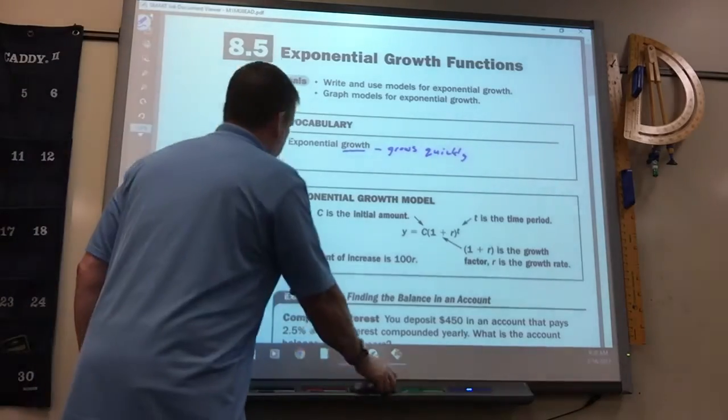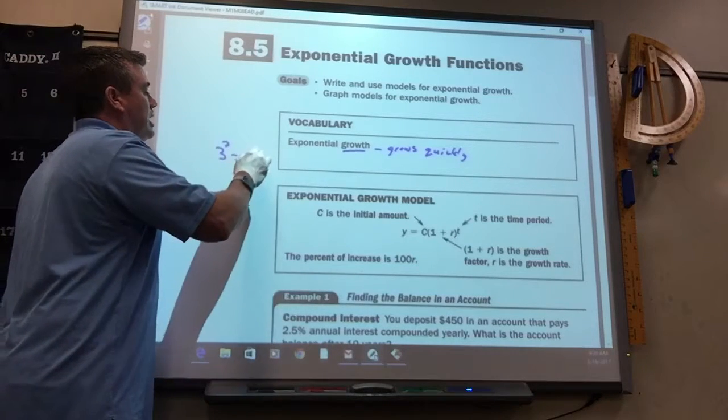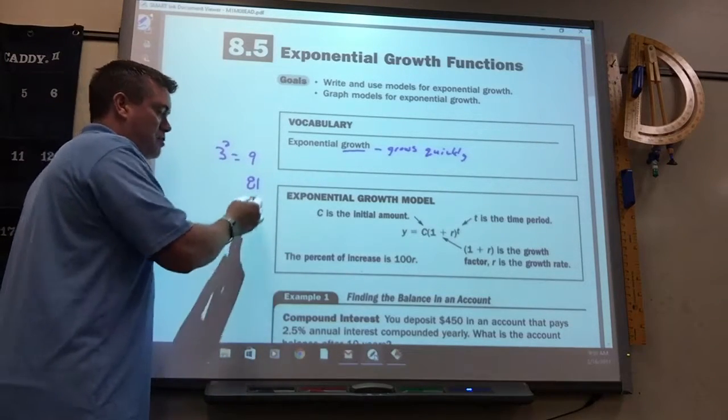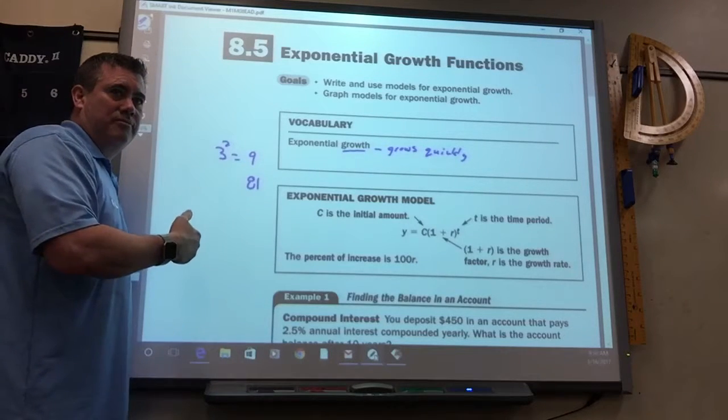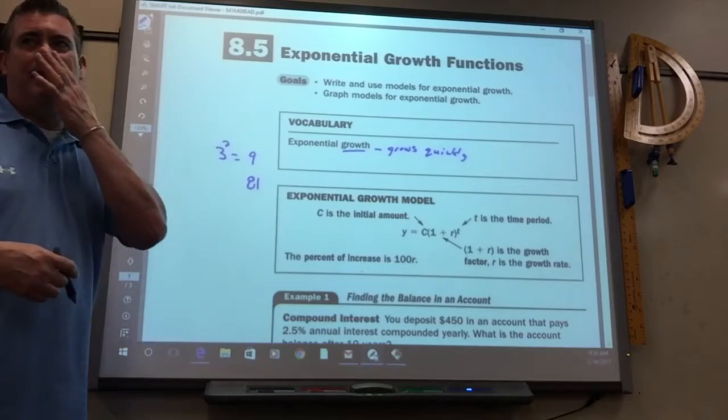That's linear, but if you take the 3 and you square it, you get 9. And then if you square that, you get 81. If you square that, you get a huge number. So exponential growth goes up a lot quicker than linear.